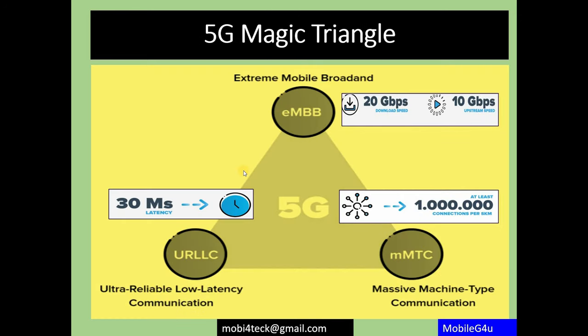This is the magic triangle of 5G. We have three main things: eMBB, URLLC, and mMTC. The first is eMBB — extreme mobile broadband — where the focus is to increase speed. Here you get 20 Gbps in downlink and 10 Gbps in uplink. This section talks about mobile broadband at an extreme level — that is one part of the triangle.